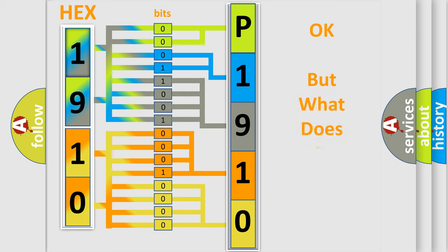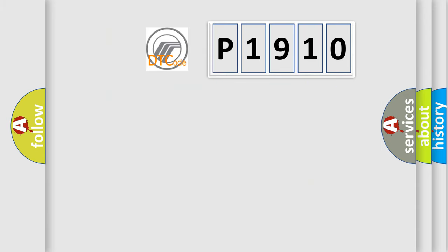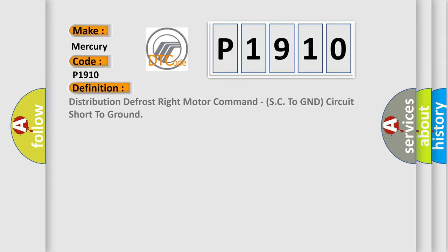We now know how the diagnostic tool translates received information into a more comprehensible format. So, what does the Diagnostic Trouble Code P1910 interpret specifically? It applies to Mercury car manufacturers. The basic definition is: Distribution defrost right motor command — short circuit to ground (SC to GND).